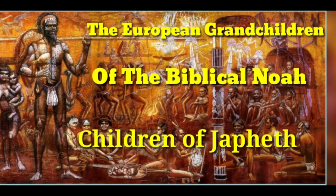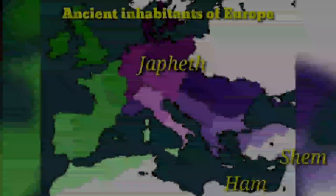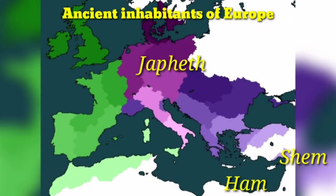This episode is about the European grandchildren of the biblical Noah — the children of Japheth. Most students of biblical history understand that the ancient inhabitants of Europe were the children of Japheth, while the children of Shem inhabited the Near East and the children of Ham lived in the area of North Africa.